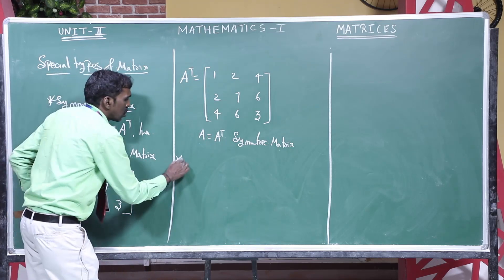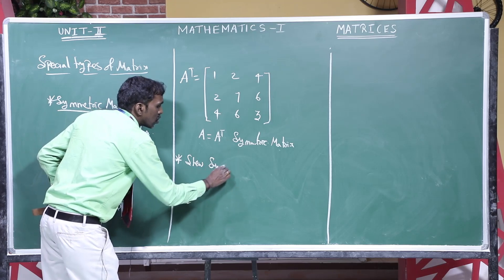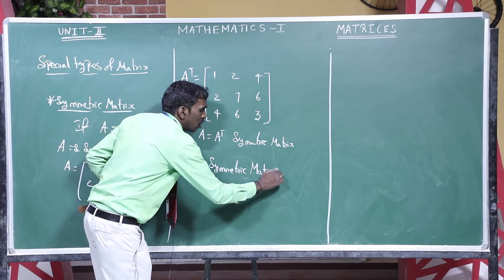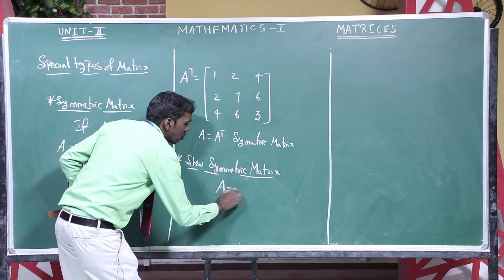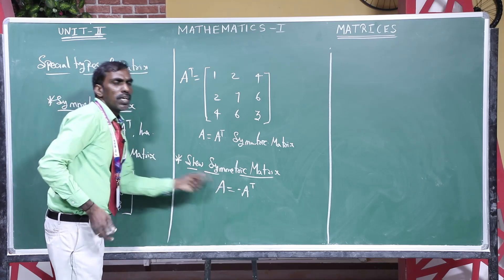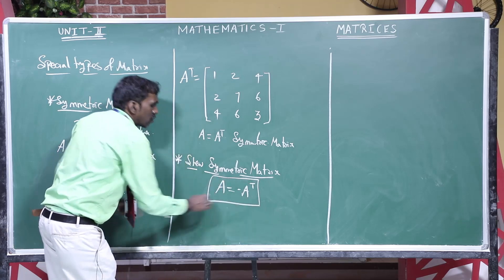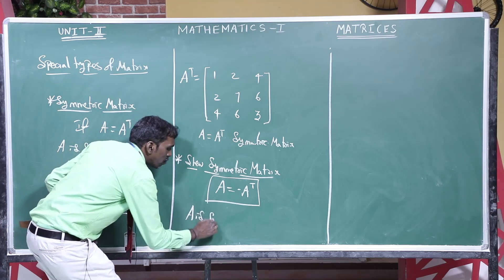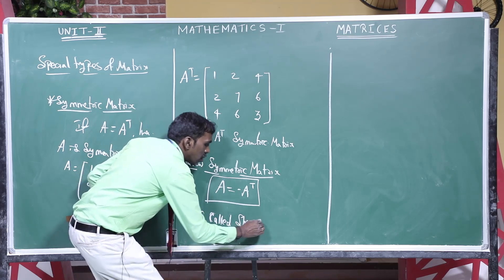Next, I am discussing the skew symmetric matrix. What is a skew symmetric matrix? It is nothing but satisfying the condition A equals minus A transpose. When I transpose the element and multiply by negative one, I get the same matrix. This is called a skew symmetric matrix, satisfying A equals minus A transpose.